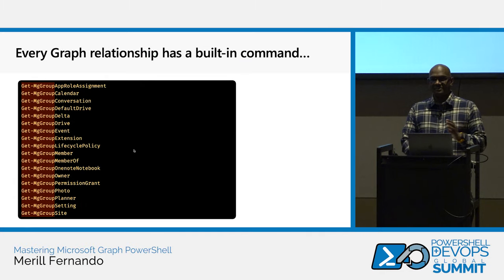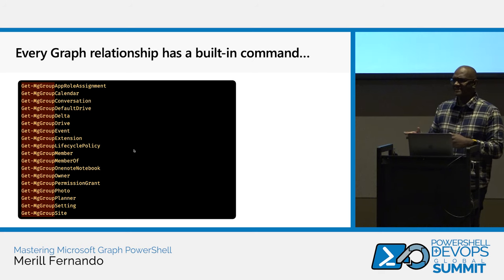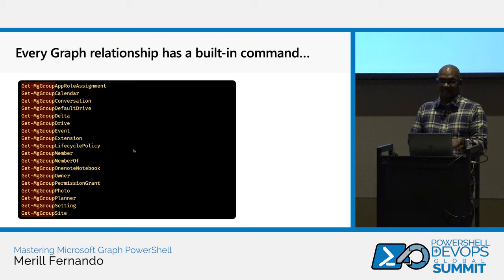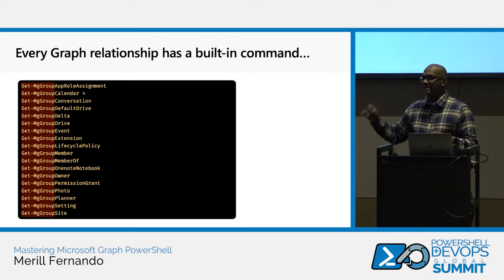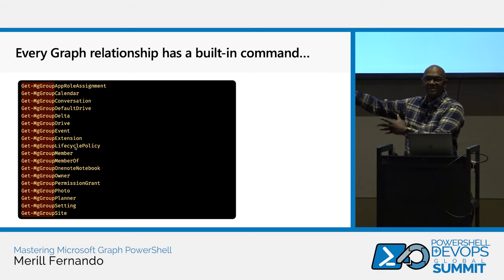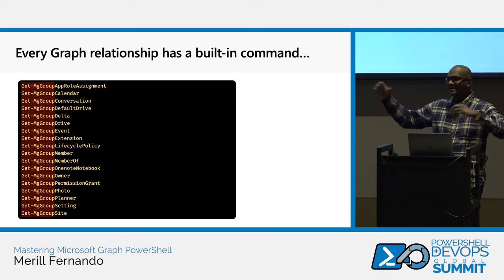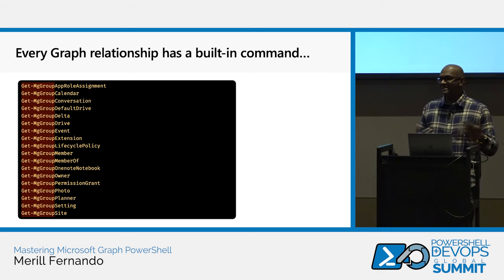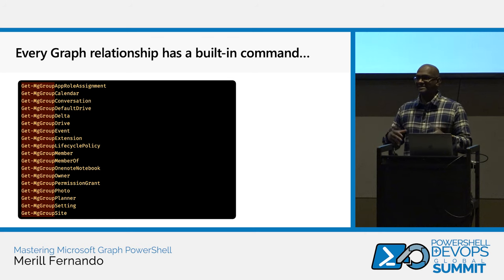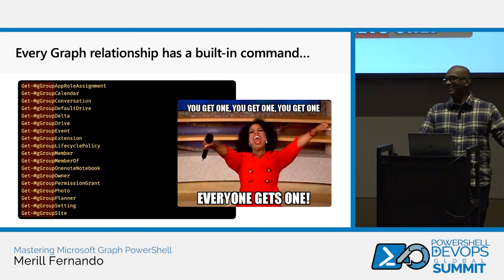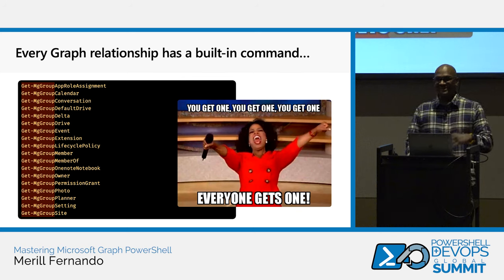Every Graph relationship has a built-in command in the Graph SDK — that's a big advantage. You don't need to write the filter and expand yourself. For example: Get-MgGroupCalendar, Get-MgGroupAppRoleAssignment passing the group ID, or Get-MgGroupMember passing the group ID to get all members. Because everything is auto-generated, no one has to write these by hand, and you get commands for every single relationship — which would be unthinkable if someone had to hand-write all of them. Your code becomes a lot easier as a result.